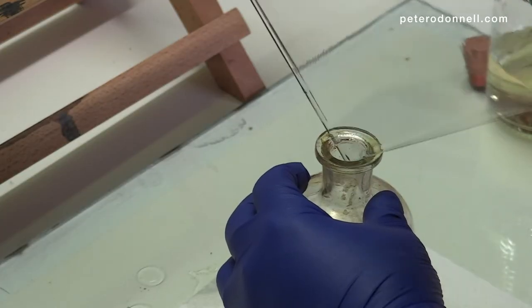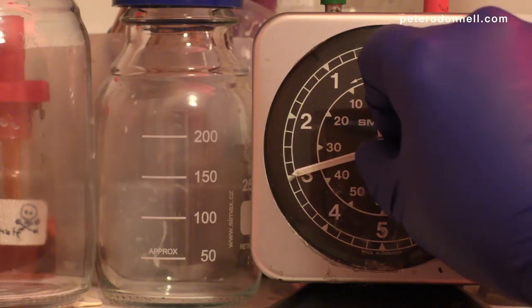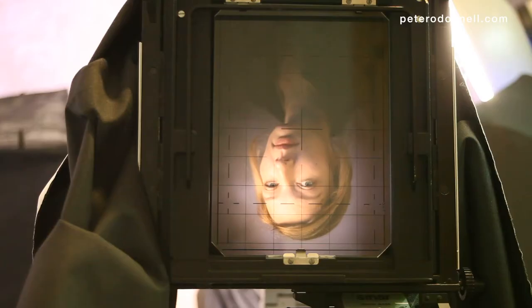Collodion is poured on a plate and then sensitized in a bath of silver. This plate is then taken to the camera and exposed.